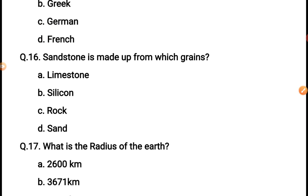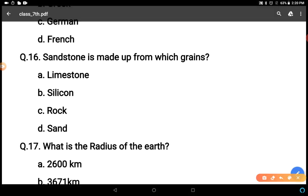Sandstone is made up from which grains? Limestone, silicone, rock, sand. By the name you can identify - sand. The correct answer is sand. D option is the correct answer.